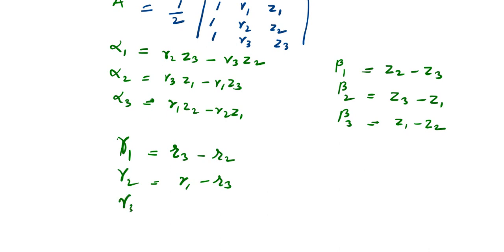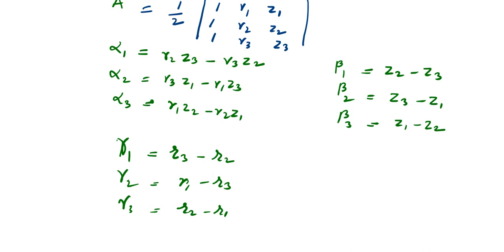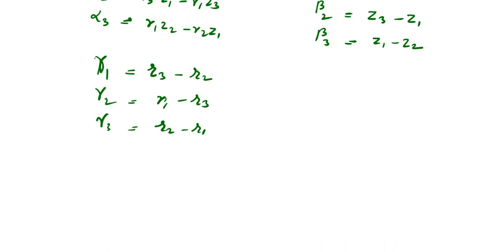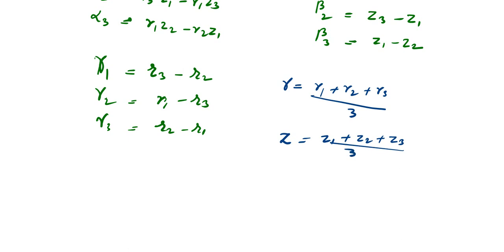You have to substitute the coordinates and calculate. The R̄ used in the strain-displacement matrix is the centroidal coordinate: R̄ = (R1 + R2 + R3) / 3. Similarly, Z̄ = (Z1 + Z2 + Z3) / 3. After substituting all values into the B matrix formula, you will obtain the strain-displacement matrix.